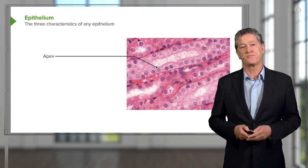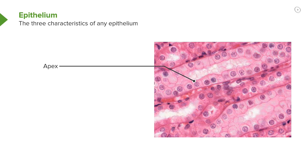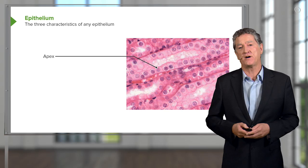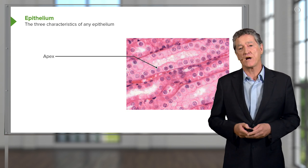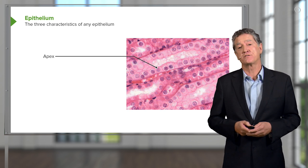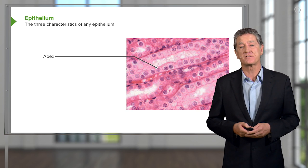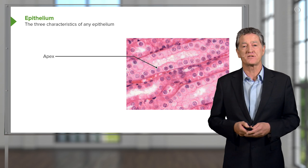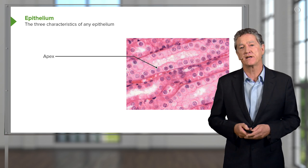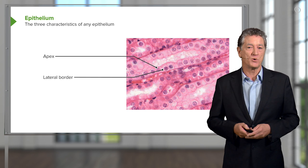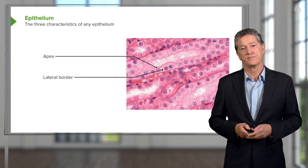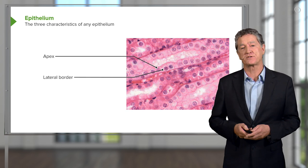Here you see a section through a collecting duct in the kidney. You don't need to understand the details of the kidney at this stage — just have a look at the section through this tube, identify the lumen, and identify the epithelial cells. They stain light pink. Some, you can see, have a nice round nucleus; in other instances you can't see the nucleus because the section just hasn't passed through that part of the cell. These epithelia all have a surface that opens into the lumen, which is that clear area in the centre. Epithelia also have a lateral border, and that lateral border has very important functions — that's where junctional complexes occur to hold these epithelial cells very closely together.